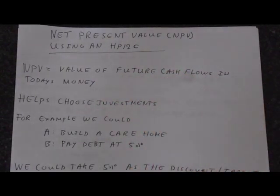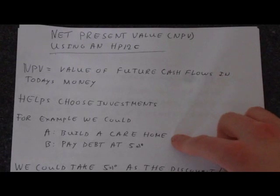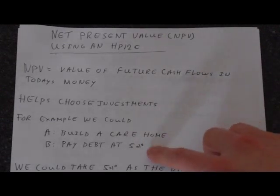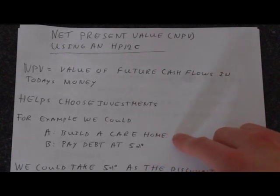Net present value is simply the value of future cash flows in today's money. The reason we use net present value is it helps us choose what investments to do. For example, we could build a care home or we could pay debt at 5%. So if you were running a company that built care homes and you've already got a lot of debt, you could be paying down that debt or you could be building more care homes.